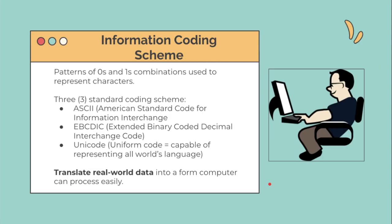What is information coding scheme? It is a pattern of zeros and ones — combinations used to represent characters. There are three standard coding schemes: ASCII, which stands for American Standard Code for Information Interchange; EBCDIC, which stands for Extended Binary Coded Decimal Interchange Code; and Unicode, which stands for Uniform Code and is capable of representing all the world's languages. This information coding scheme is used to translate real-world data into a form a computer can process easily.